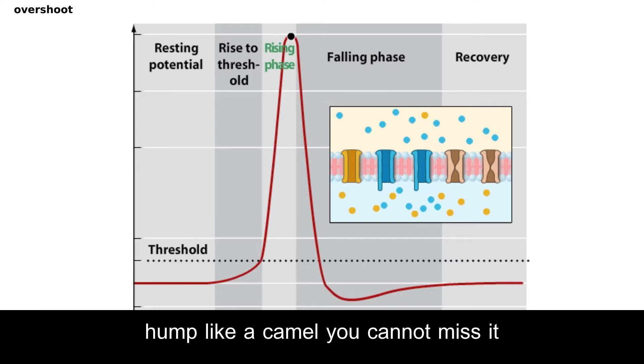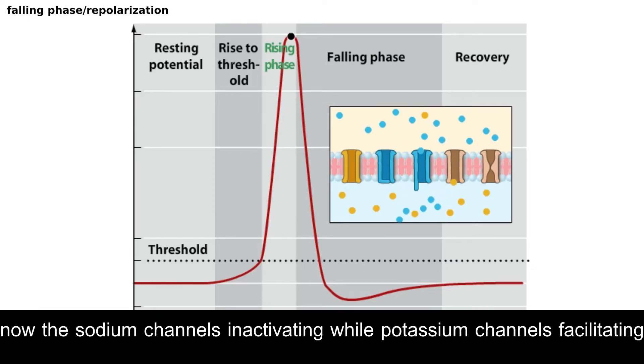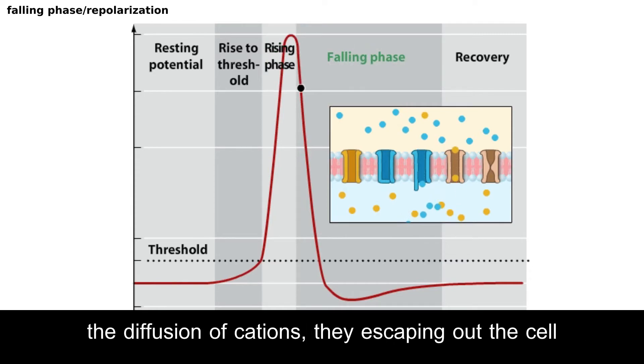Hump like a camel, you cannot miss it, 'cause we switching the channels like television. Now the sodium channels inactivating while potassium channels facilitating the diffusion of cations. They escaping out the cell, all that's taking place within a couple of milliseconds while the AP is propagating.